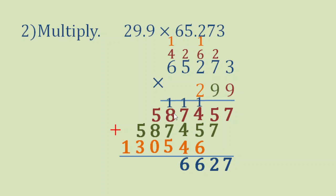Then 1 plus 8 plus 7 plus 5 is 21. So bring down 1, carry 2. So 2 plus 5 plus 8 is 15. Bring down 5, carry 1.